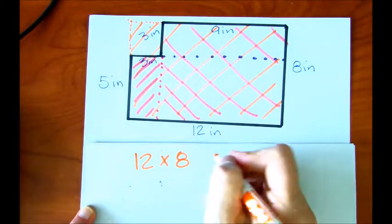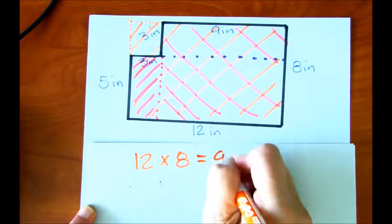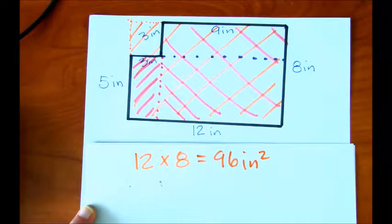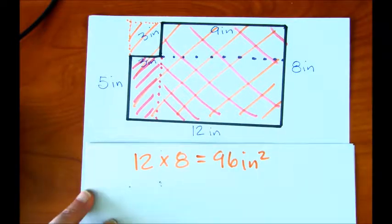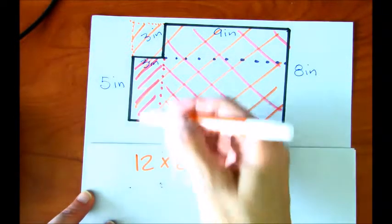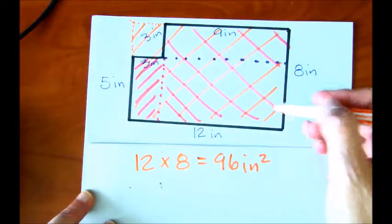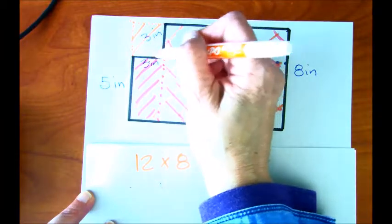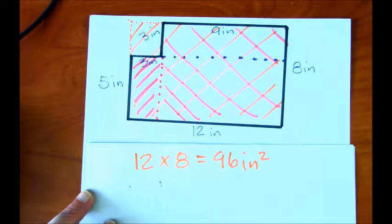So 12 times 8. Well, 12 times 8 is going to give you 96 inches squared. Now, we don't really want to know, though, the total of just this giant rectangle. Because really this rectangle here, or actually this square here, is not included in the figure.